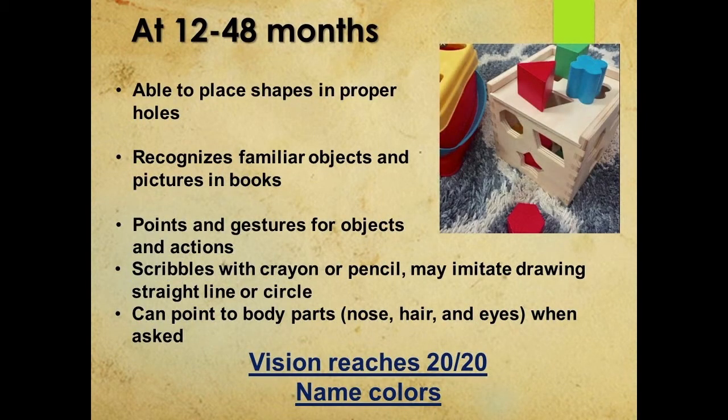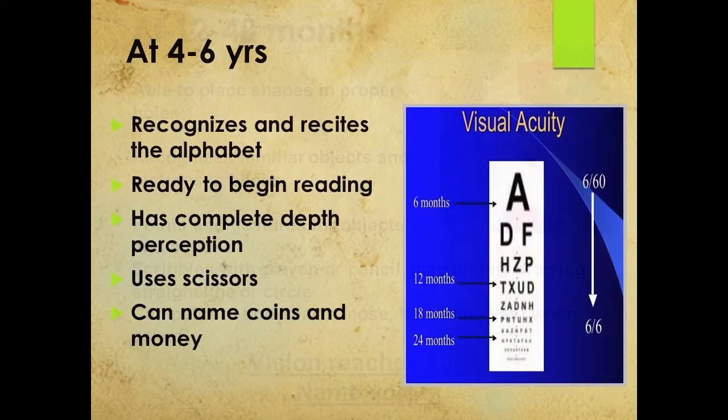At 12 to 48 months, children almost reach an adult stage. They are able to place shapes in proper holes, recognize familiar objects and pictures in books, point out objects, and respond to gestures and actions. They are able to scribble with a crayon or pencil, and vision usually reaches 20/20 during this period. By the sixth year, the child is able to recognize and recite alphabets, read the Snellen chart, has complete depth perception, and can name coins and use scissors.